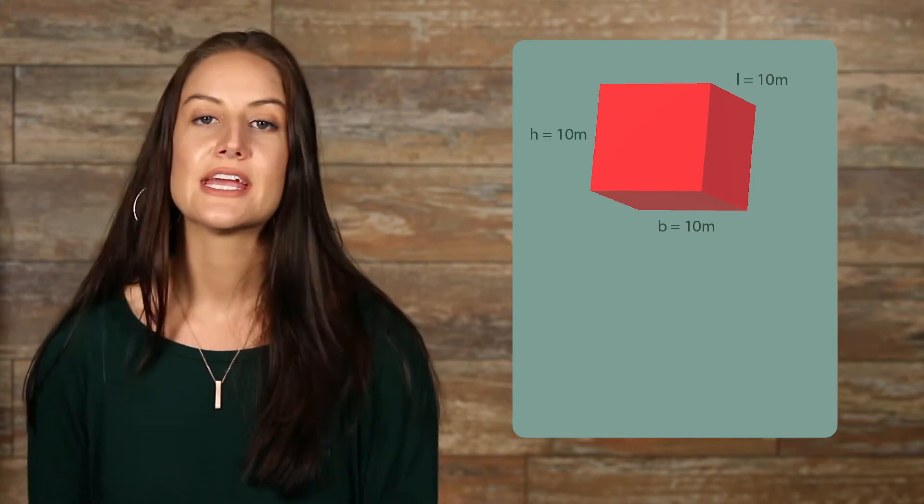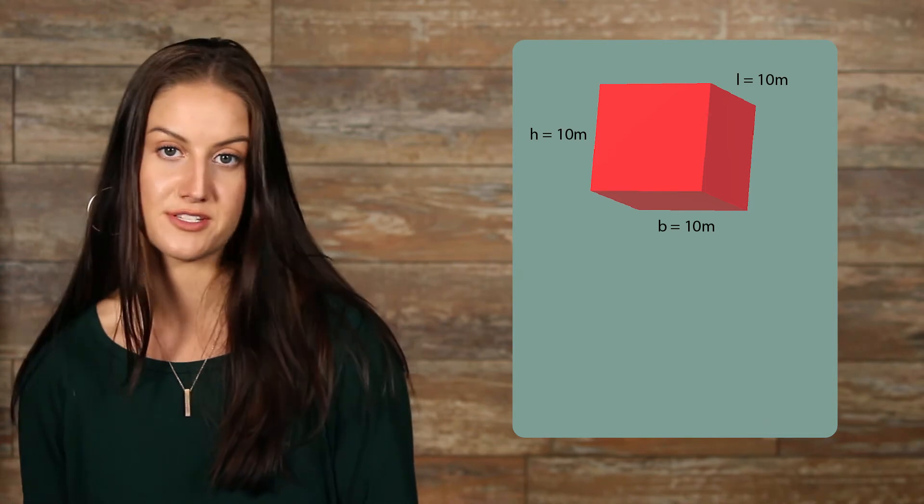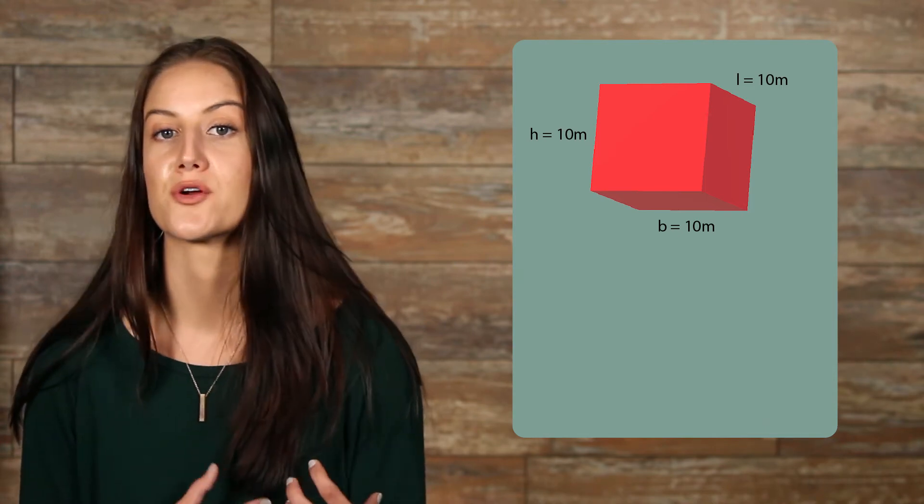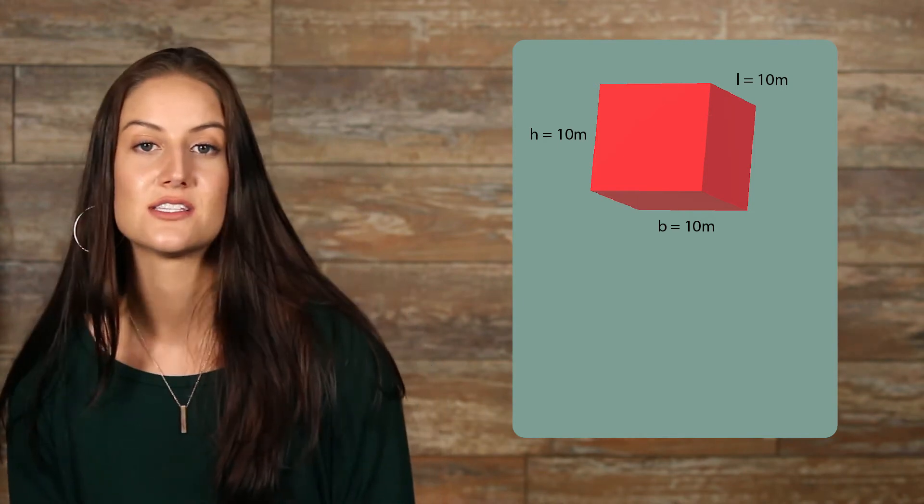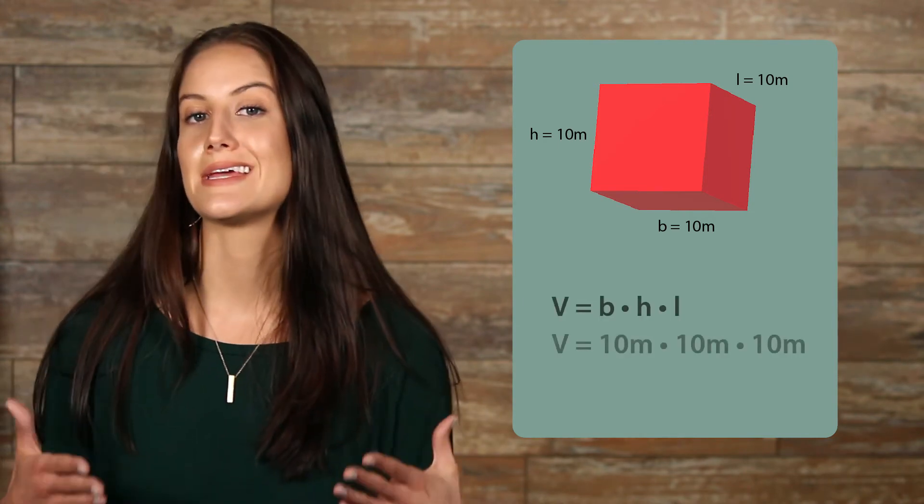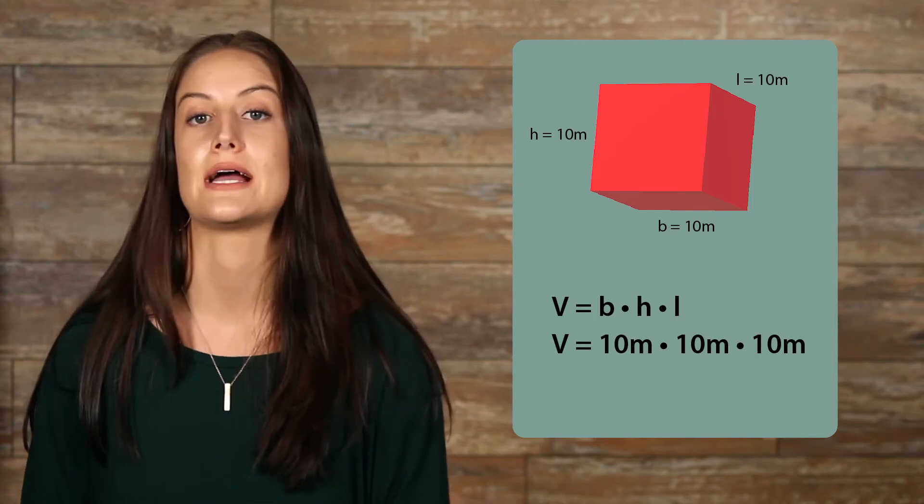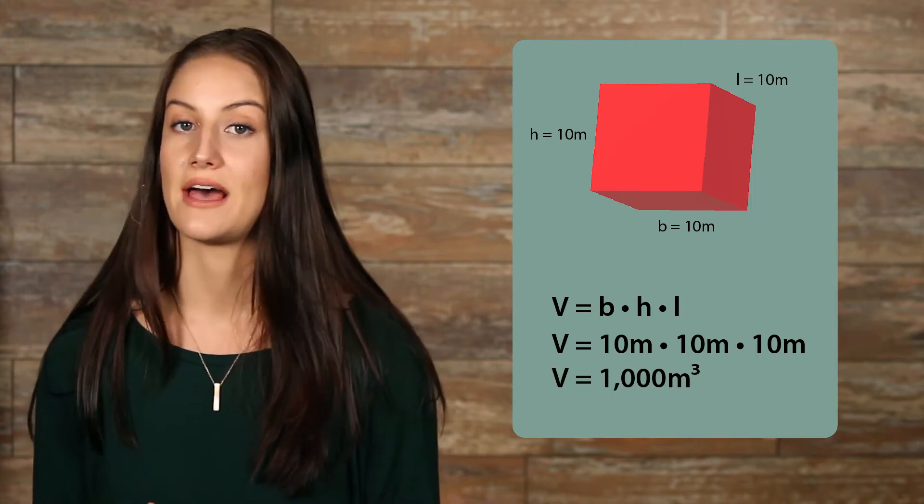Here's an example. Here we have a cube, which is a rectangular prism, but all the sides are perfect squares. Because it's a cube, we know that all of the sides are the same distance, so all we need to do is multiply 10 times itself three times. This gives us 1000 meters cubed.